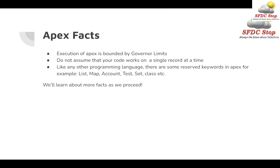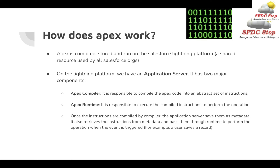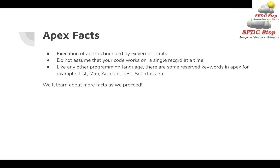Let's take a look at some interesting facts about Apex. Execution of Apex is bounded by governor limits — these are limits of the Salesforce platform. It ensures that no single Apex execution impacts the overall service of Salesforce, because as we learned earlier, it is running on a shared platform. So you have some limits; for example, you can only query 50,000 records in a single Apex process.